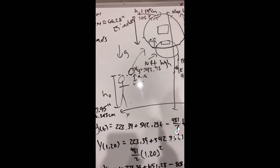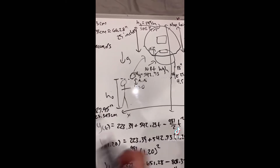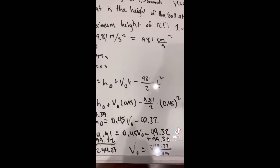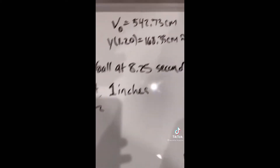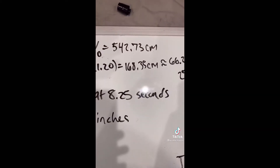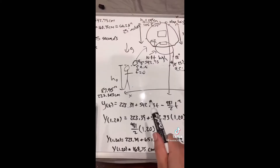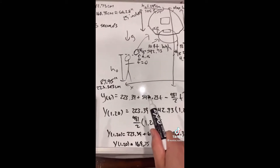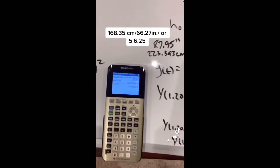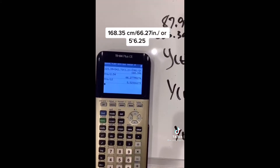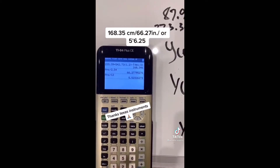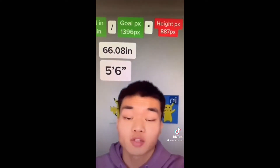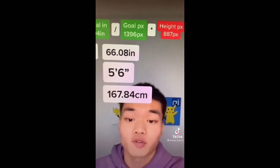We wanted the exact answer in centimeters, so we had to convert everything. Next, we needed to solve for the initial velocity, which was 542.73 centimeters. Now we can just plug that in and set T equal to 1.2 to be left with about 168.35 centimeters, or about 5'6¼. That says you're 5'6 or 167.84 centimeters.